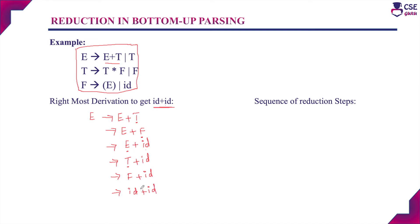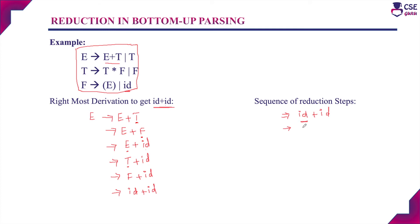Bottom-up parsing is nothing but the reverse of rightmost derivation. For the same input string id plus id, we apply bottom-up parsing to show how the reduction process takes place. The given input string is id plus id. First, we choose 'id' and find the matching right-hand side production F derives id. This id is a substring and is replaced with the left-hand side non-terminal F.